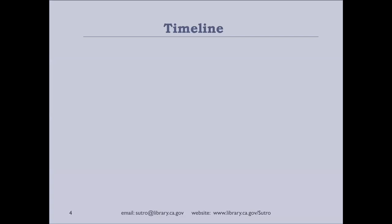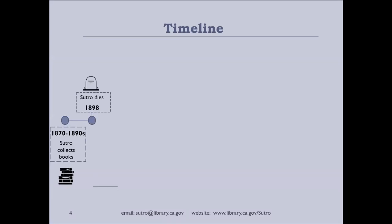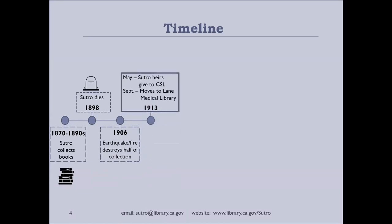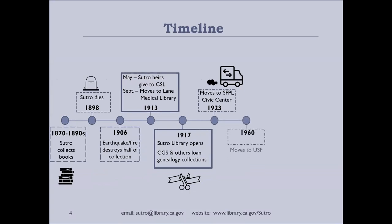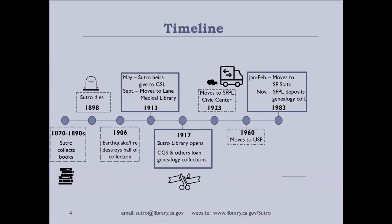A brief history of the library: the heirs fulfilled their father's wish by gifting the library to the state of California — the people of California. Unfortunately, while they were making this decision, the 1906 earthquake and fire happened and we lost 60% of our collection. We officially opened our doors in 1917 as a state library, when our genealogy collection officially began with donations and loans from the genealogical community. For a number of decades we moved from one temporary location to the next until reaching our permanent home in the J. Paul Leonard Sutro Library on the SF State campus.